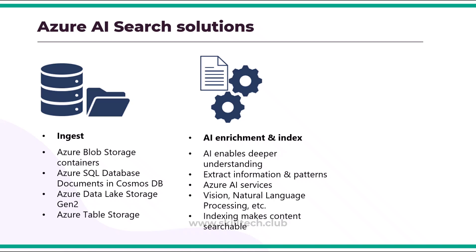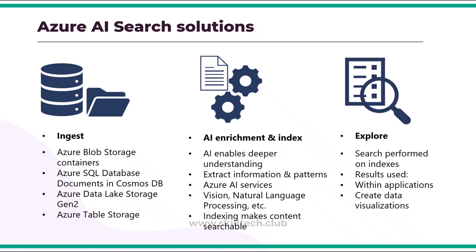Once AI enrichment is done, we configure indexing to make the content searchable and to allow search tasks to be performed much faster. That is the third and final stage: explore. Once indexes are configured, you can perform search operations on them. The results can be associated with data visualization tools like Power BI or other dashboards, or used within your application. This whole process of ingestion, enrichment, and explore is what Azure AI Search Service provides.